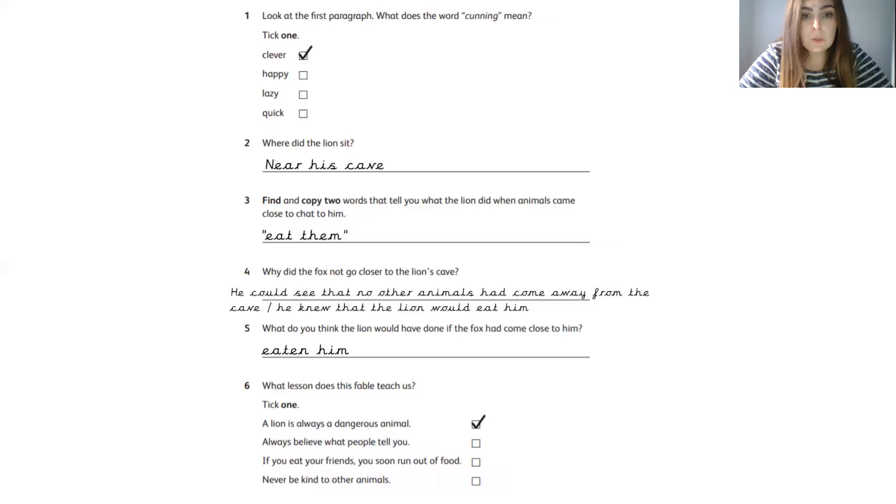Question number three. Find and copy two words that tell you what the lion did when the animals came close to chat to him. Look at those words in bold. You're finding and copying just two words. Give yourself a mark if you wrote eat them.